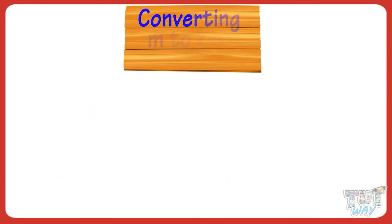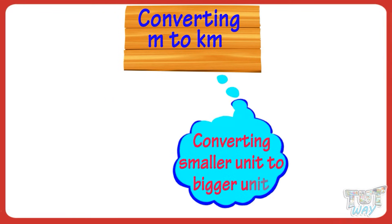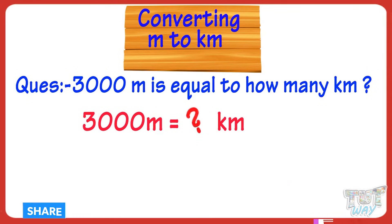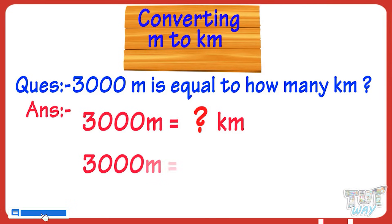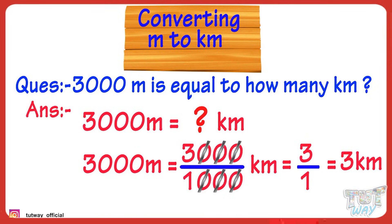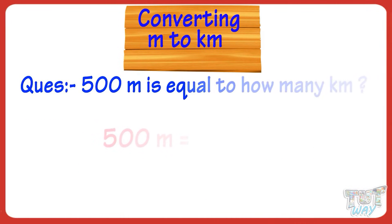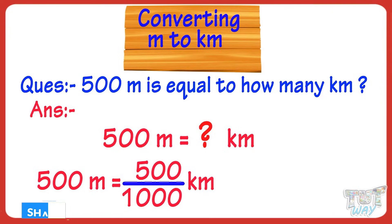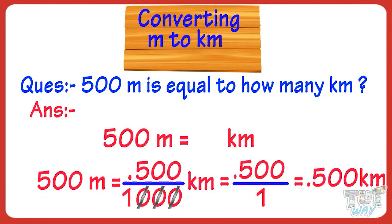Now let's learn converting meters to kilometers — that is, smaller unit to bigger unit. Whenever we convert smaller unit to bigger unit, we divide. 3,000 meters equals how many kilometers? We divide by 1,000 — so 3,000 divided by 1,000, cutting three zeros, we get 3. So 3,000 meters equals 3 kilometers. 500 meters equals how many kilometers? We divide by 1,000 — 500 divided by 1,000, putting the decimal after three digits from the right, we get 0.5. So 500 meters equals 0.5 kilometers.